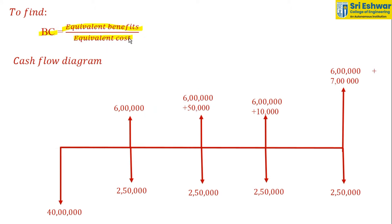The formula for BC ratio is equivalent benefits divided by equivalent costs.